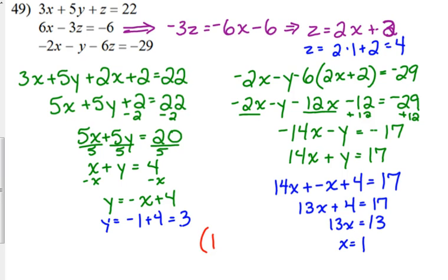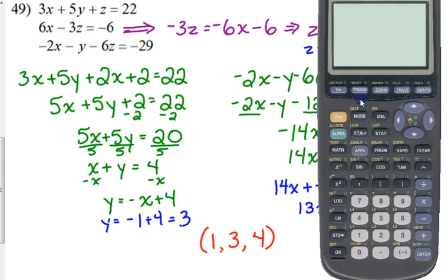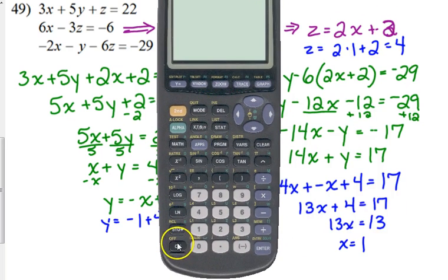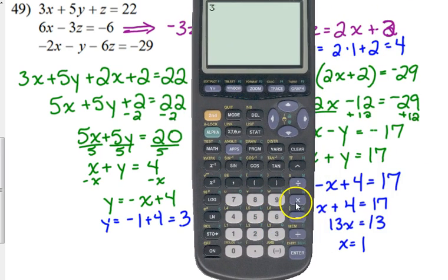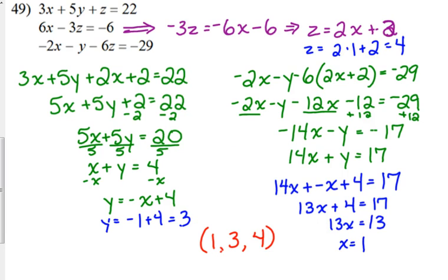So, our solution. X is 1. Y is 3. Z is 4. Yes, you need to put it in x, y, z order and form. And just to be sure, I am going to plug it into... I'm going to check it in both the first and the third one. So, 1, 3, and 4 are our solution. So, 3 times 1 is 3. Plus 5 times 3. Plus 4. 22. Negative 2. Minus 3. Minus 6. Times 4. Negative 29.